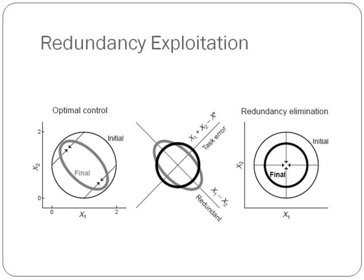Before comparing model simulations to human subject data, the optimal control model was compared to the desired trajectory model. As can be seen in the figure, the optimal control model decreased task error by increasing variance in the redundant subspace, whereas the desired trajectory model decreased variance in all subspaces, hence increasing the task error. This shows that the optimal control model more effectively decreased task error compared to the desired trajectory model.